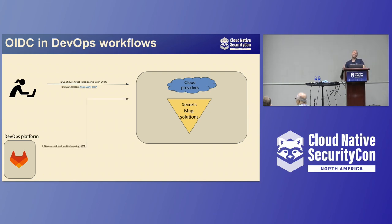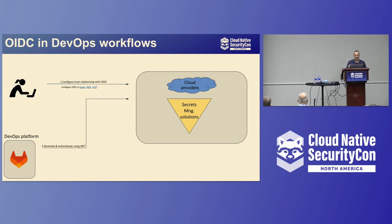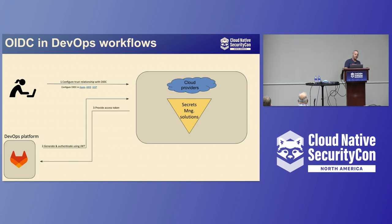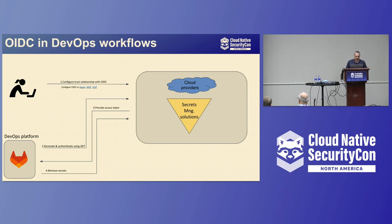Second, any DevOps platform — GitLab, GitHub, CircleCI, Jenkins — is capable of generating a JWT token. That JWT token is sent to the cloud provider where it is authenticated. This is where the matching on the claims happens. If authenticated, you get back an access token, and with that access token you can go ahead and retrieve secrets. I'll show you how this looks in the configuration — but this is more or less what you need to do with any platform you have today.